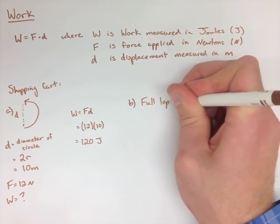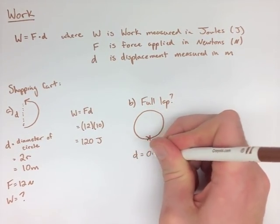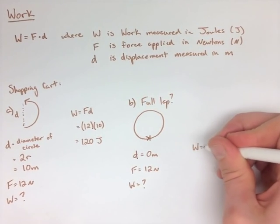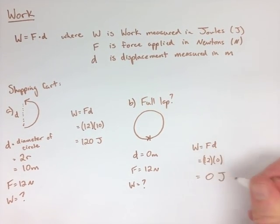For the second part, we've gone all the way around the circle now. This is very similar to our velocity question in the first unit, where we have a displacement of 0. It doesn't matter what the force is, because 0 times anything is going to give us 0. So our work is 0 joules.